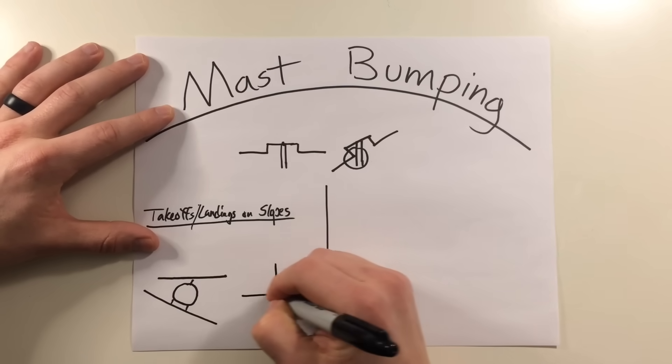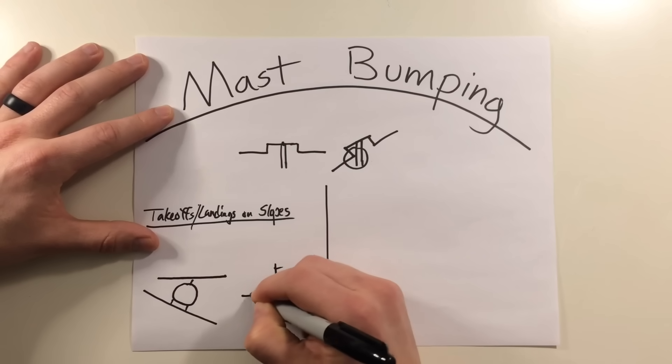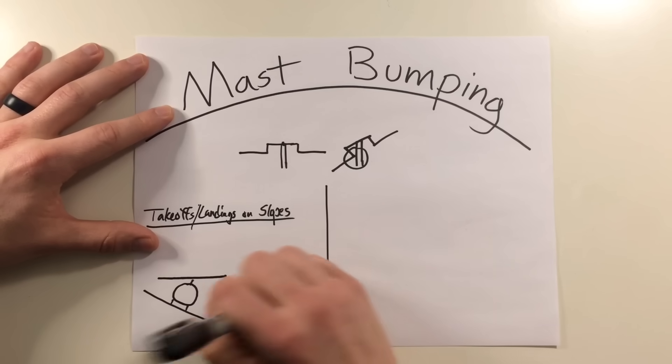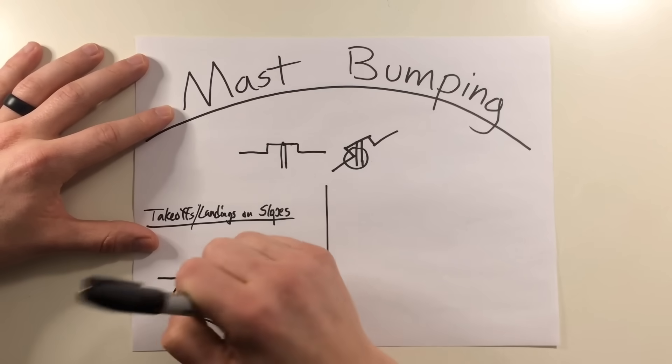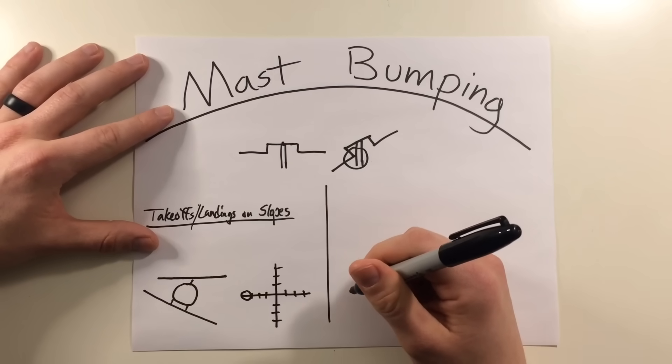So typically, if this is the freedom of movement of your cyclic in any direction, if you're getting to a point where your cyclic is all the way in one direction and you're trying to land on a slope or take off from a slope, you may find yourself getting into some kind of mast bumping.